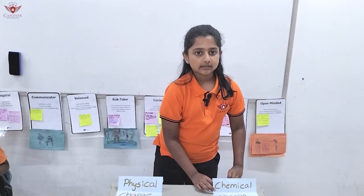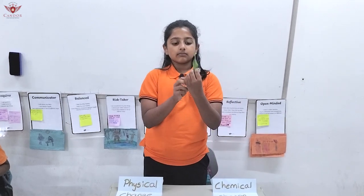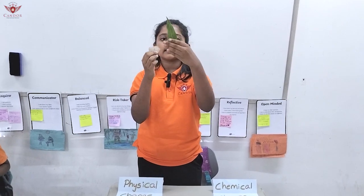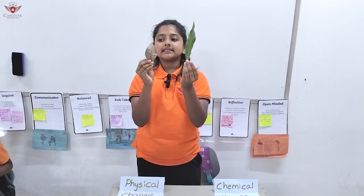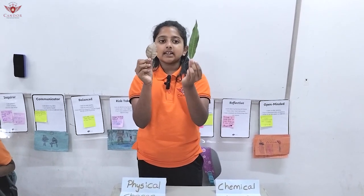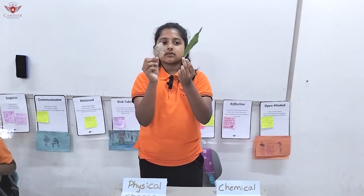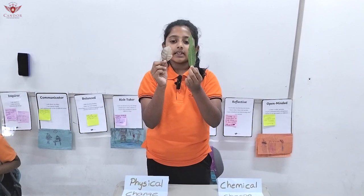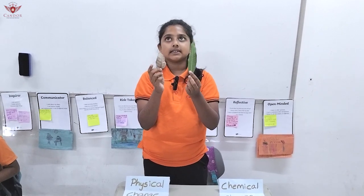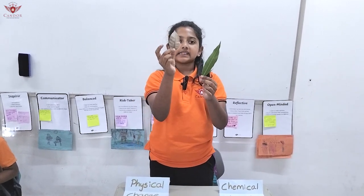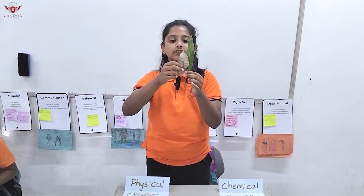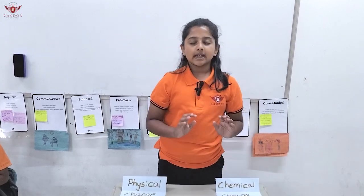Now let's move on to the other one called chemical change. This is a lush green leaf and this is a dry leaf. This lush green leaf can take weeks, days, months, or decades to form into this dry leaf.